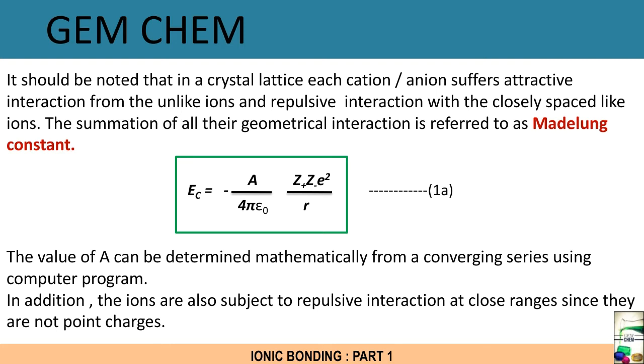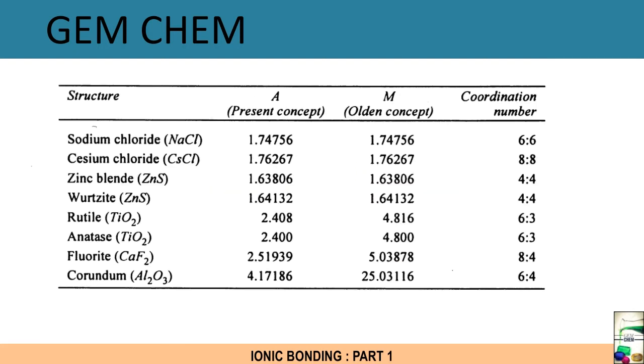In addition, the ions are also subjected to repulsive interaction at close ranges since they are not point charges. So here we have dealt with attraction, now we are going to deal with repulsion. Here few Madelung constant values are being given for few structures. We will deal with only present concept, olden concept is not required for us. These are the values.